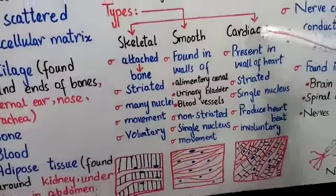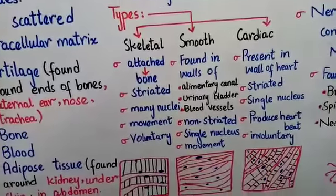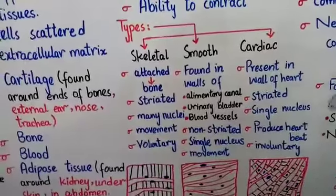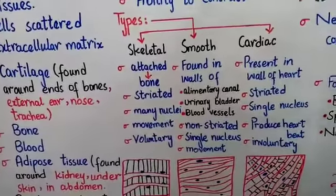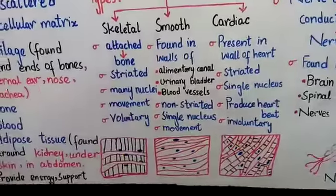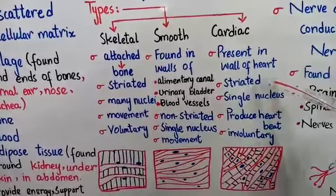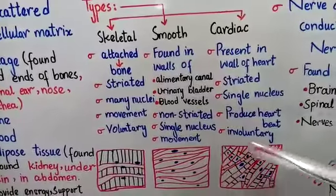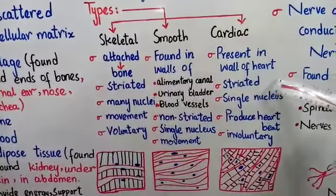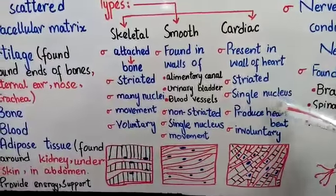The last type of muscle tissue is cardiac muscles. Cardiac muscles are present in the walls of the heart — the word 'cardiac' is associated with heart. Their cells are also striated, like skeletal muscles — you can see the linings — so these are striated muscles. But there is a single nucleus in each cell.